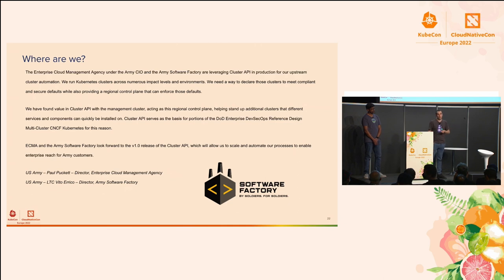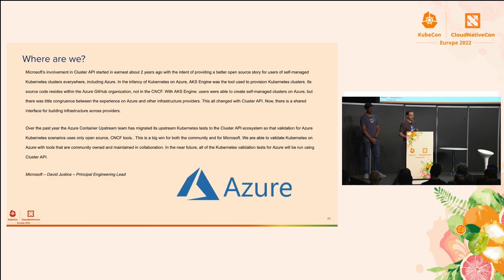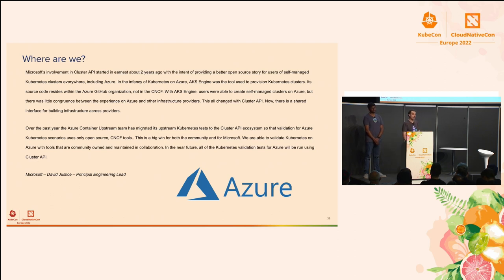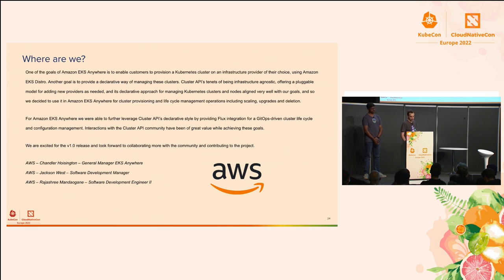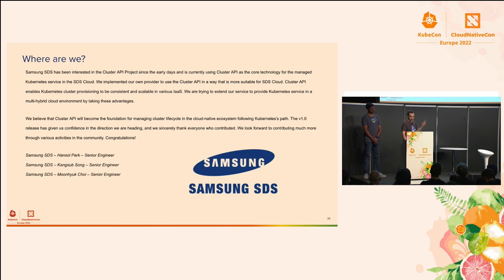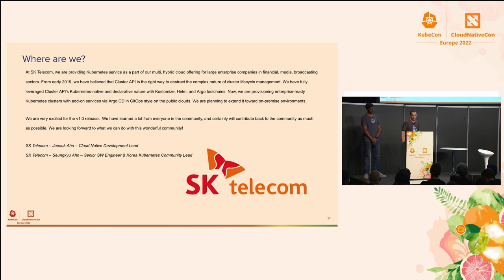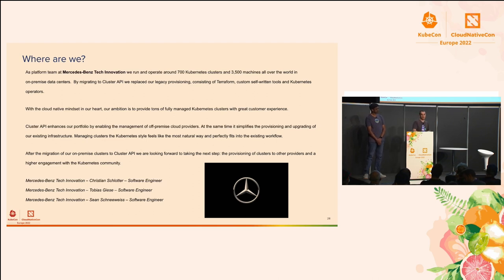The U.S. Army Software Factory is using Cluster API in production today — I didn't know that until we published the 1.0 release. Azure is deeply involved; they have the CAPZ (Cluster API Azure) provider. Amazon EKS Anywhere is also built on top of Cluster API. Samsung SDS and SK Telecom use Cluster API in their production clusters. Mercedes-Benz — you've probably seen the talk about the 700 clusters that were moved, and they're also using Cluster API.